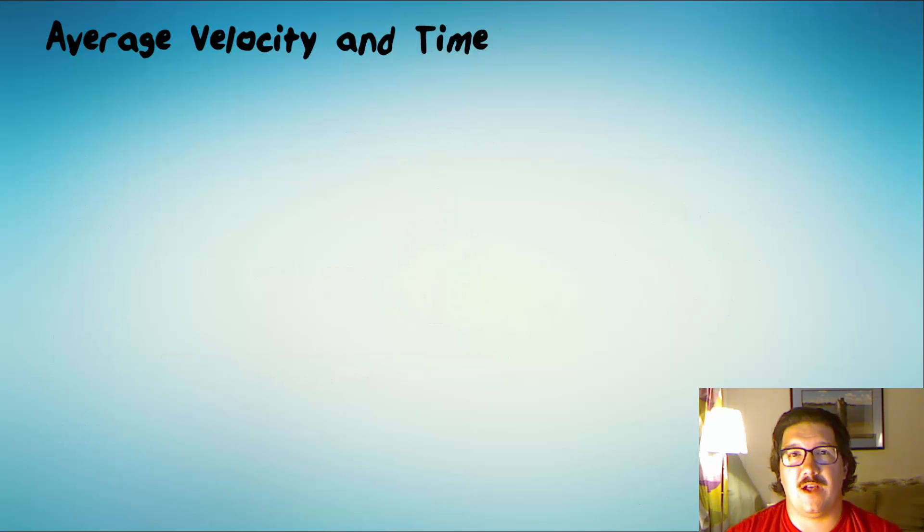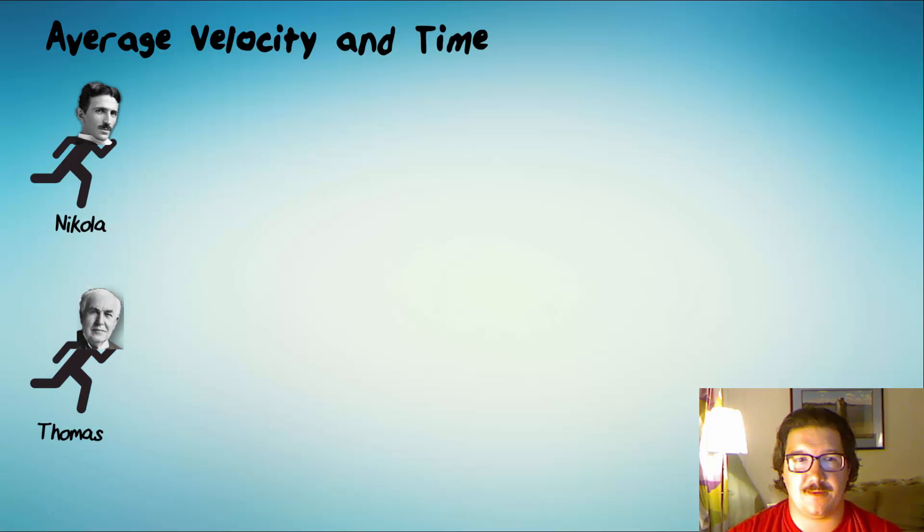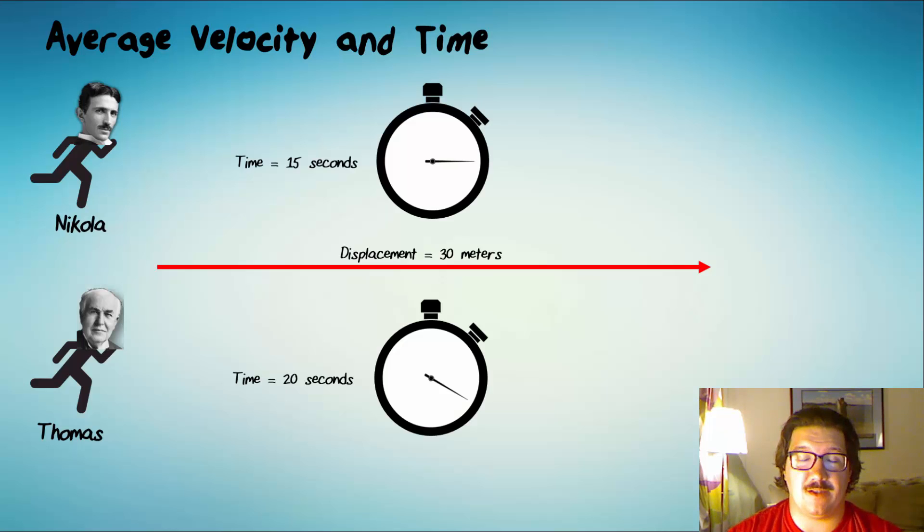Now, let's see how average velocity and time are related. Let's imagine another foot race between Nikola and Thomas. This time, they're both going to run 30 meters, and we'll see who runs it in less time. Nikola takes 15 seconds, and Thomas takes 20 seconds. And I'll ask the same question, who had the greater average velocity? Well, if Nikola ran the race faster, meaning in less time, then he had the greater average velocity. And again, Thomas could have been running faster than him at a couple of moments, but over the course of the entire 30 meters, Nikola was faster.